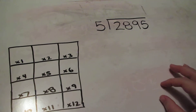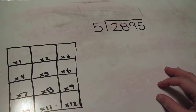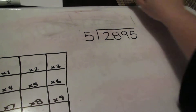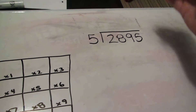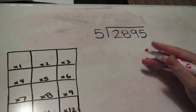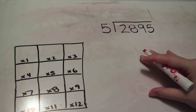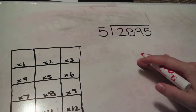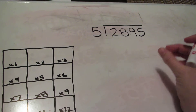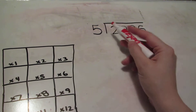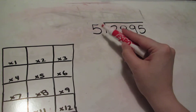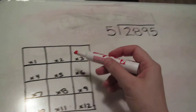Here's another method of doing long division. In some of the other videos you saw a way to do it that involved a lot of multiplying — this way involves multiplying as well, but we're only going to look at different sections of the number at a time. So here I'm going to do 2895 divided by 5.